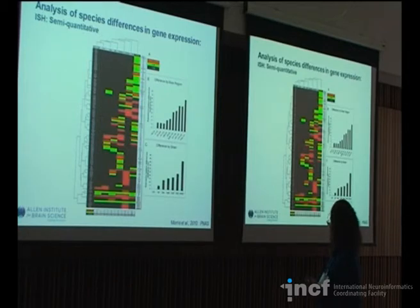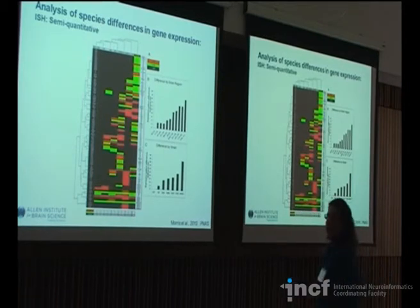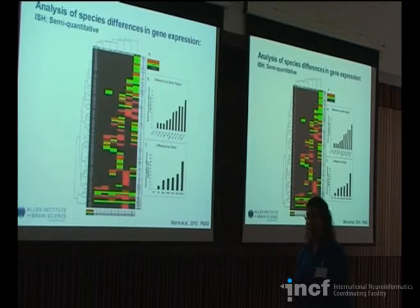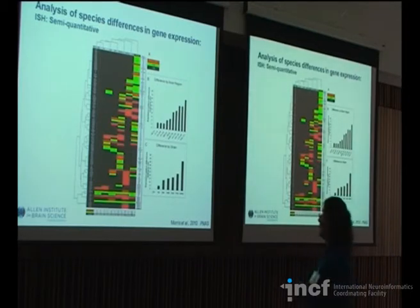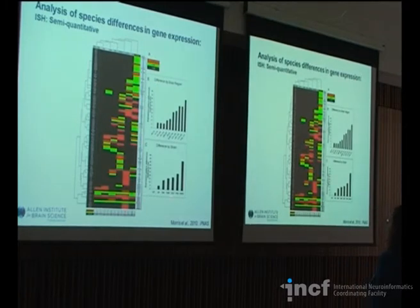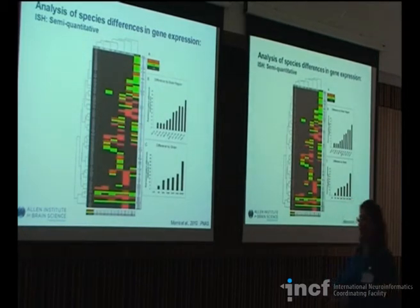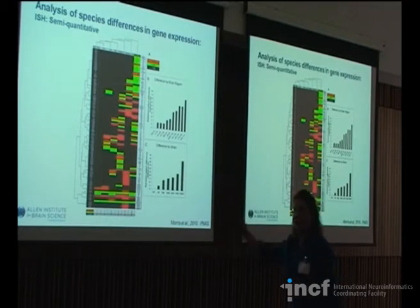This is a paper by Morris et al. in PNAS looking specifically at ISH data from the mouse brain. It's a semi-quantitative study of species differences in gene expression — they took all these areas, did a semi-quantitative analysis of expression intensity and density across seven different species of lab rats, and looked for changes. They found that evolutionarily, the farther you get from the C57 black general lab rat, the more differences you have in gene expression across structures. The largest number of changes tends to be in the thalamus, cortex, and hippocampal formation — areas we think of as more evolutionarily evolved.